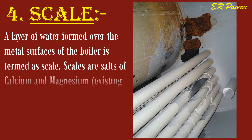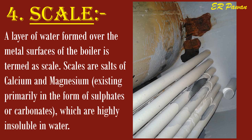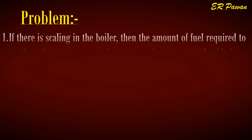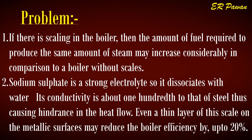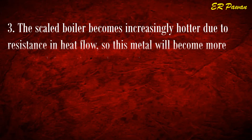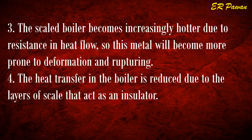Problem four: scale. A layer of deposit formed over the metal surfaces of the boiler is termed as scale. Scales are salts of calcium and magnesium, existing primarily in the form of sulfates or carbonates, which are highly insoluble in water. Problems: one, the amount of fuel required to produce the same amount of steam may increase considerably; two, sodium sulfate is a strong electrolyte whose conductivity is about one-hundredth that of steel, causing hindrance in heat flow; three, even a thin layer of scale on metallic surfaces may reduce boiler efficiency by up to 20%; four, the boiler metal becomes hotter due to resistance in heat flow, making it more prone to deformation and rupturing; five, heat transfer is reduced as scale layers act as an insulator.